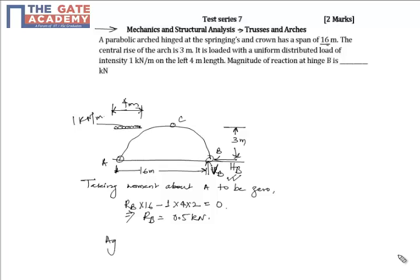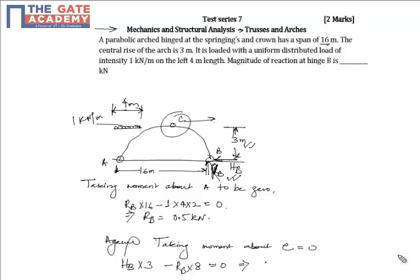Again taking moment about this point, moment about C equal to 0, we get HB times 3, that is HB times this 3, minus RB or VB times 8 equals 0.5 kN. From here we get HB is equal to 1.33 kN.